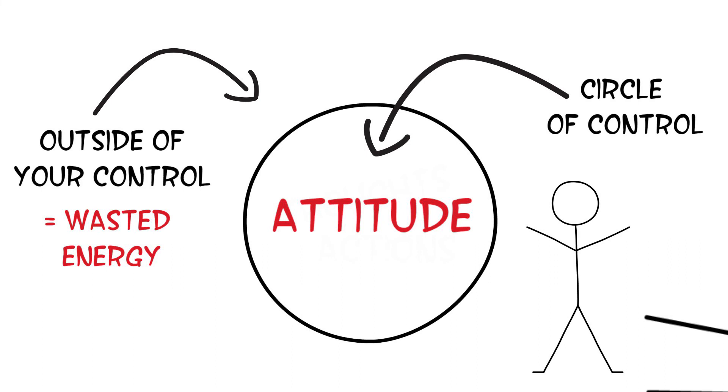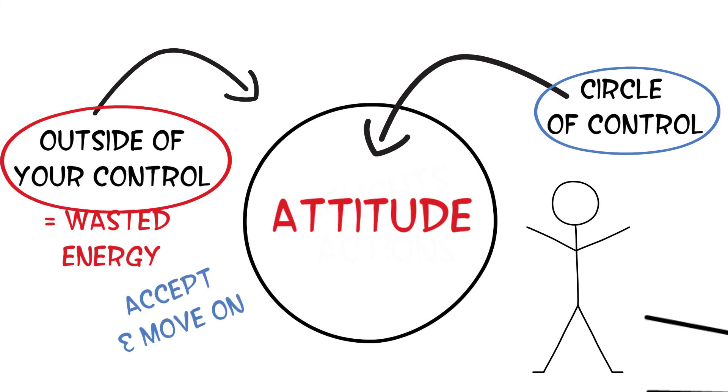When something happens in your life, consider whether it is under your control or not. If it is, then assess the situation and act on it. But if not, and it is something that has already happened or is currently happening, accept that it is outside of your control and move on. This exercise helps you not to get triggered and not to act on impulse.